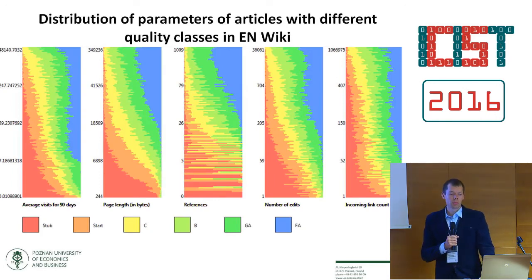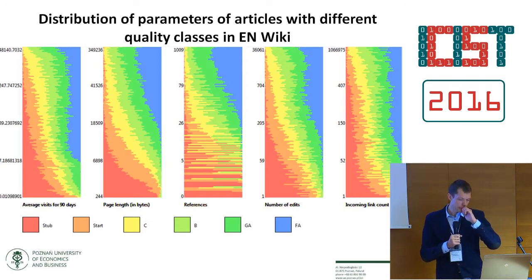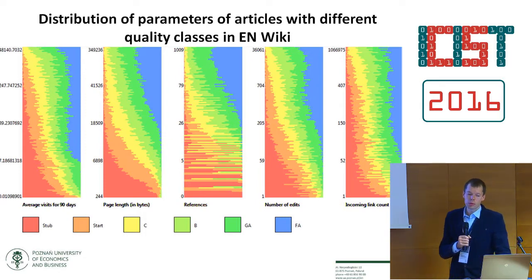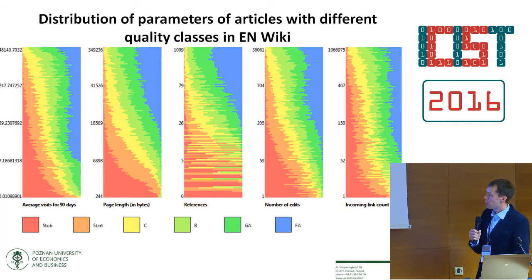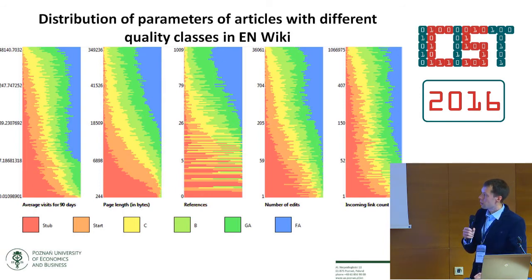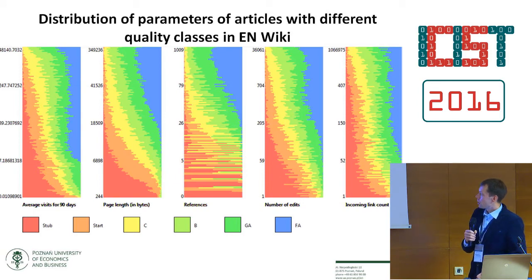This figure shows the distribution of variables in articles with different quality levels in English Wikipedia. It shows that an increase in each feature correlates with an increase in the share of high-quality articles. The five measurements shown are: average visits over 90 days, page length in bytes, number of references, number of edits, and incoming links.